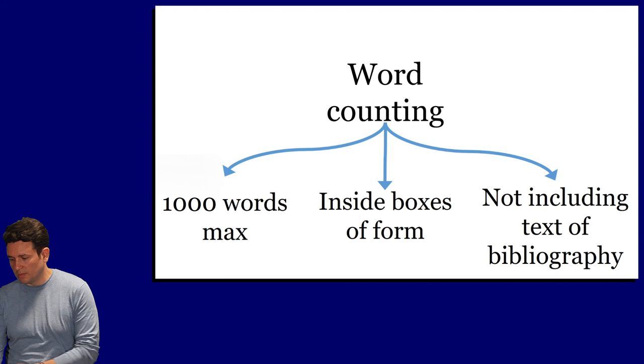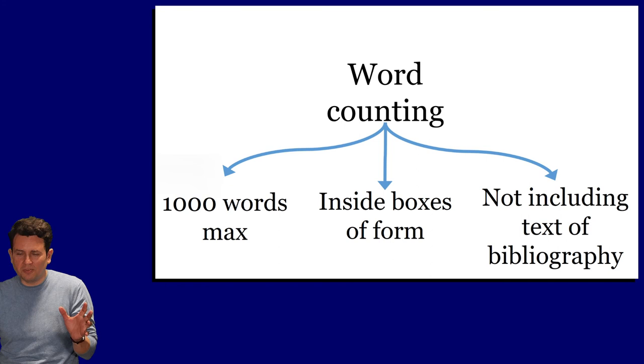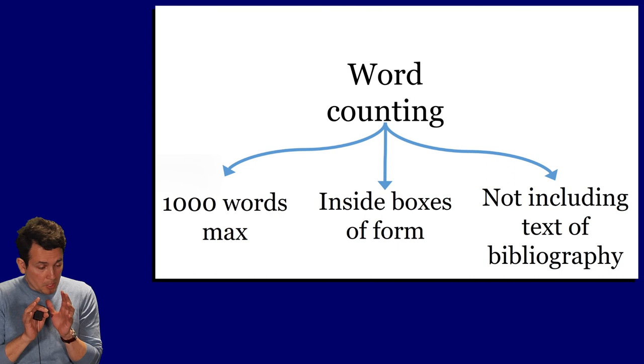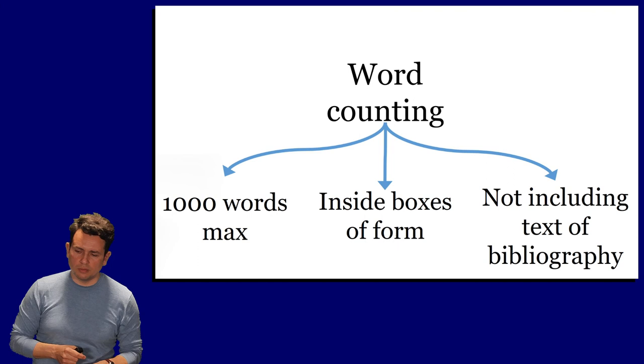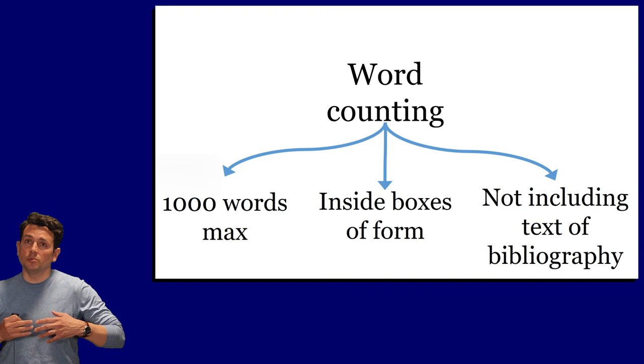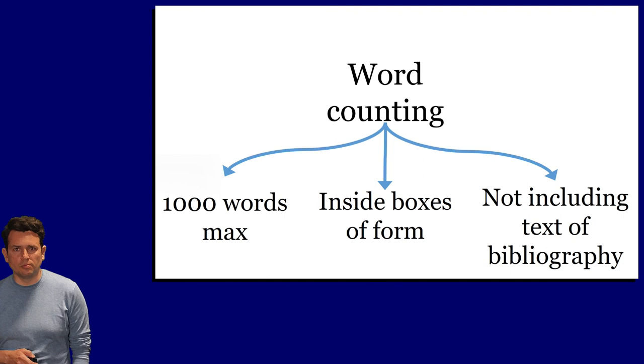And finally, the word counting. It's very difficult, indeed, to talk about the problem system, to talk about the scientific fields, the artifact, the business case, in a thousand words. It's very difficult. So you need to carefully think about each word. Of course, we don't take into account titles. We don't take into account the text of the bibliography towards the end. But certainly, this is one of the must. Because sometimes we even have to read ten proposals per week. And so what I mean here is that less is more. So you need to carefully think about the wording. And we only count the wording inside of the boxes of the form.